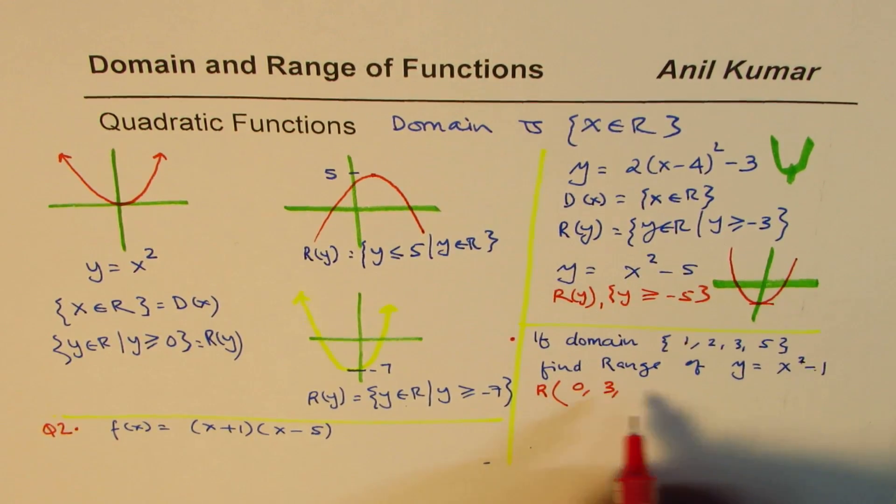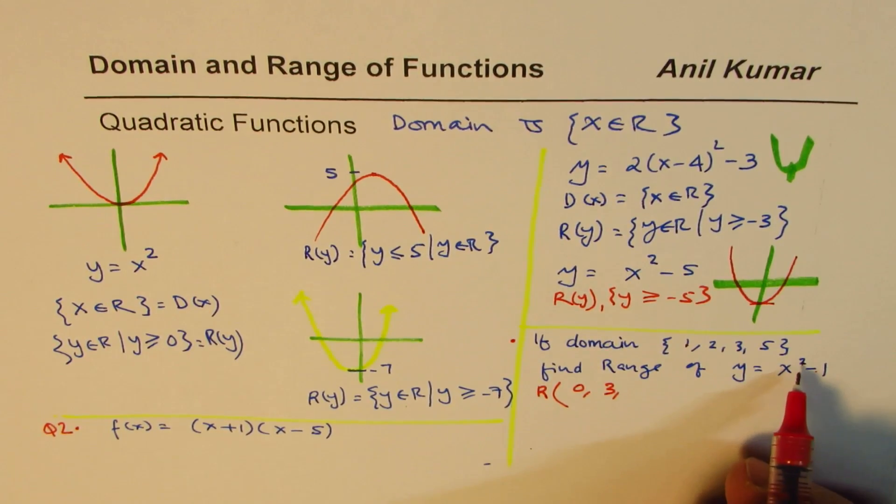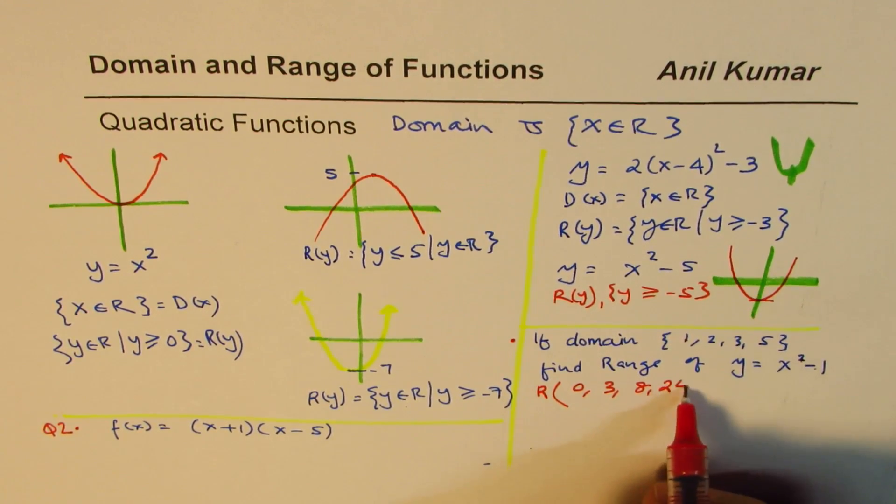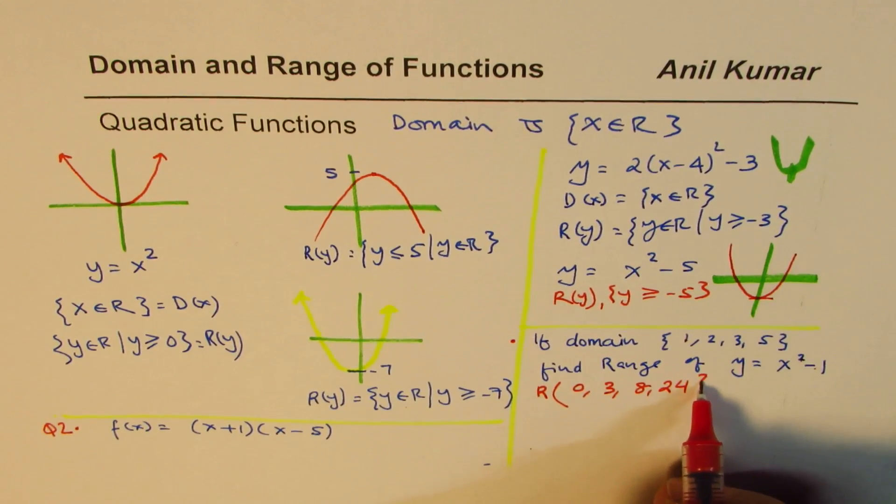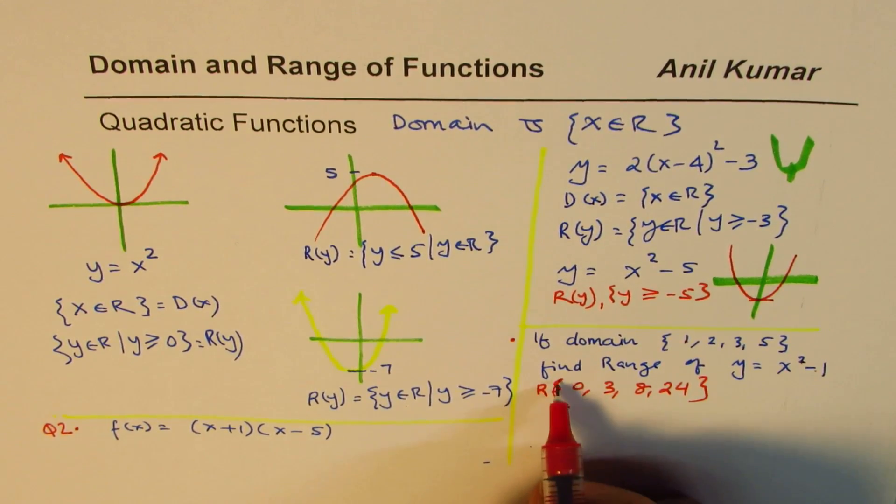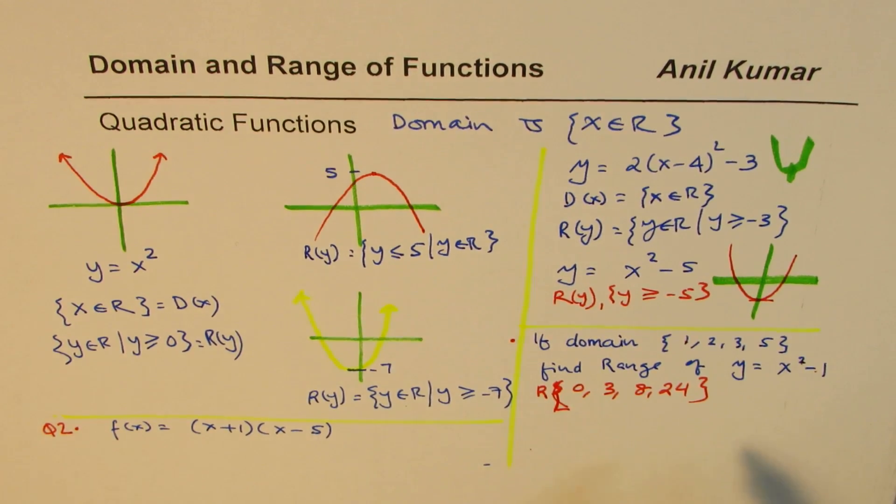Then I substitute 3, 3 squared is 9, 9 minus 1 is 8. Then 5, 5 squared is 25, minus 1 is 24. So that becomes the range of this function. Do you see that? So if you are given only a few integer values as given here, then you have to calculate those values for the given function and write the answer. So that's the tricky part.